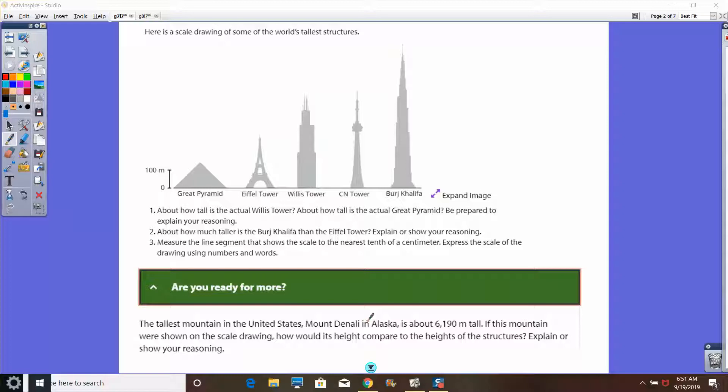Now, in this question which is are you ready for more, it says Mount Denali in Alaska is about 6,190 meters tall. If this mountain were shown on the scale drawing, how would its height compare to the heights of the other structures? There's a lot of different ways to answer this question. You can determine based on this scale how tall they really are, and if you want to look them up on the web you can do that as well.